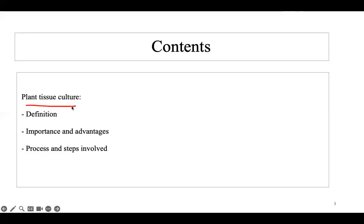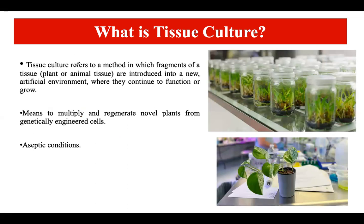In this lecture we are going to talk about plant tissue culture, which is an important technique in the field of plant biotechnology and agriculture. This field is flourishing because it has a lot of advantages with which we can improve crops and produce healthy plants. We will discuss the definition, importance, advantages, and the steps involved in this technique.